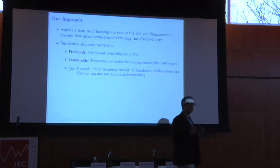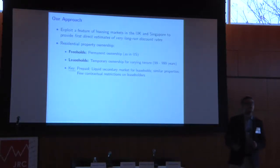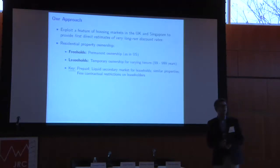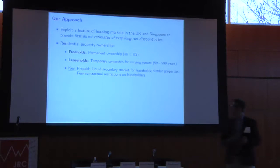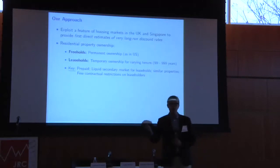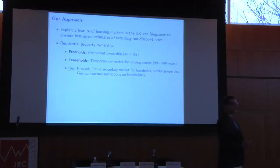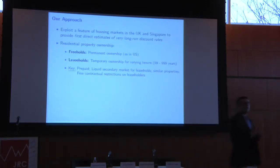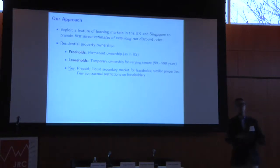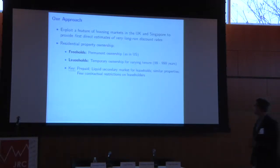There are several features of these leasehold contracts that make us comfortable using them. First, they're prepaid — this is not like a commercial lease in the US where you make annual payments, but a complete upfront payment for 200 or 300 years of ownership. Second, there are very liquid secondary markets for those leaseholds. If you buy a 300-year or 400-year leasehold and 30 years in you want to move, you can sell the remaining 270 or 370 years to the next buyer. This allows us to observe a large term structure of remaining leasehold durations with transaction prices.